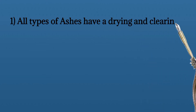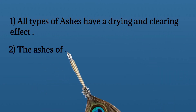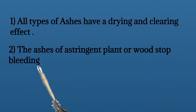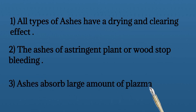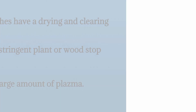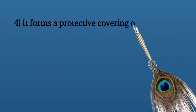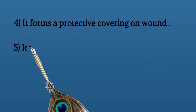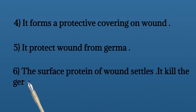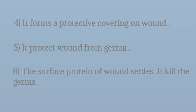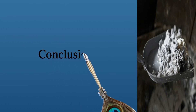The scientific benefits of ashes: all types of ashes have a drying and clearing effect. The ashes of astringent plant or wood stop bleeding. Ashes absorb large amounts of plasma and form a protective covering on the wound. It protects the wound from germs, and the surface of the wound settles. It is also used to kill germs.